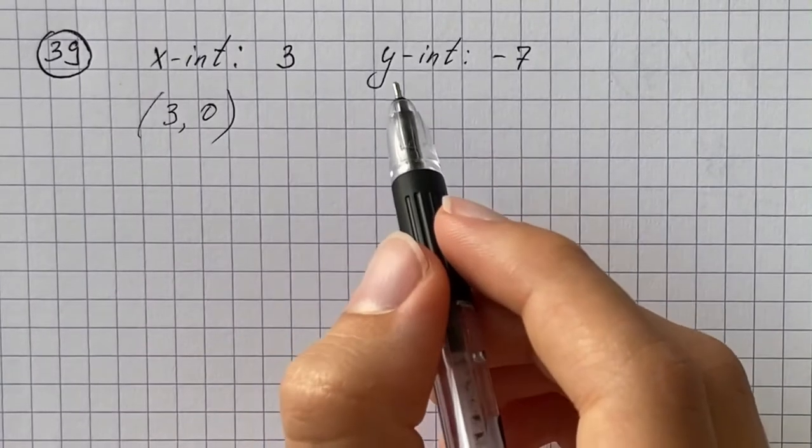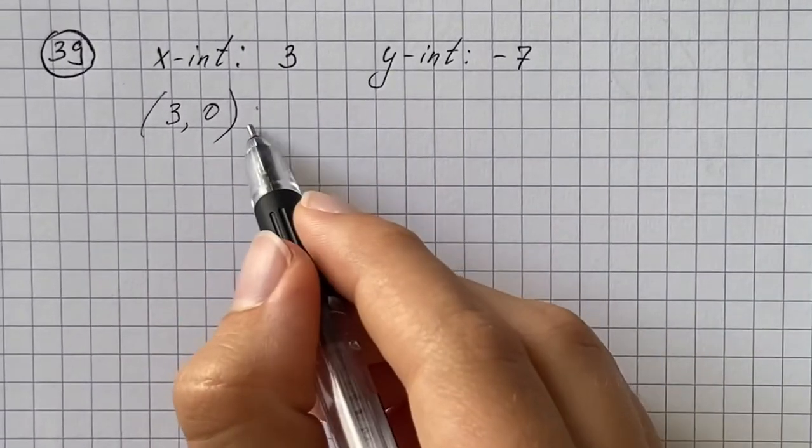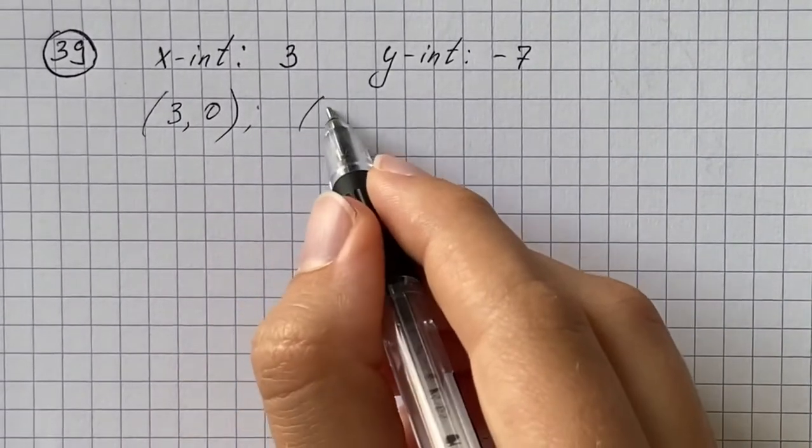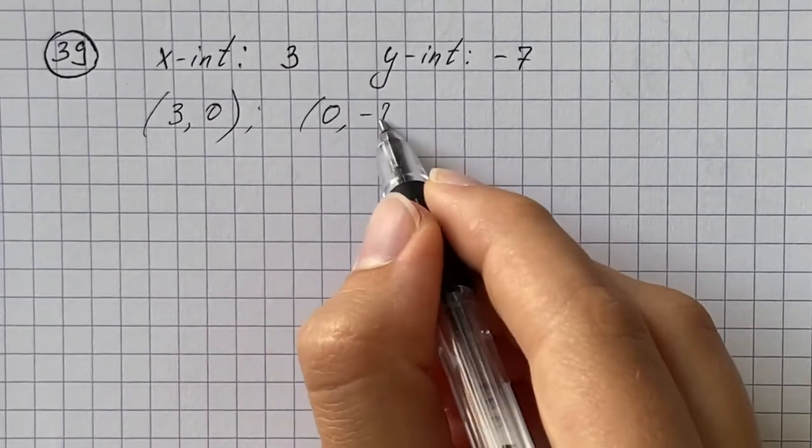And if it has y-intercept as negative 7, it means that it goes through (0, -7).